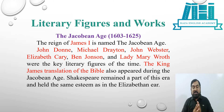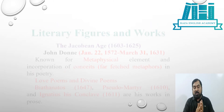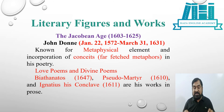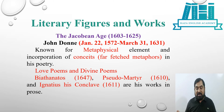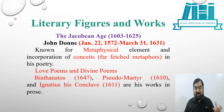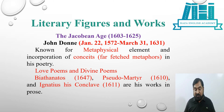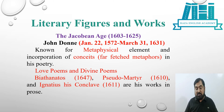John Donne was born on January 22, 1572 and died on March 31, 1631. He is known for the metaphysical element and incorporation of conceits — far-fetched metaphors — in his poetry. He is known for his love poems and divine poems. His important prose works include Biathanatos, which came out in 1647; Pseudo-Martyr, which came out in 1610; and Ignatius His Conclave, which came out in 1611.